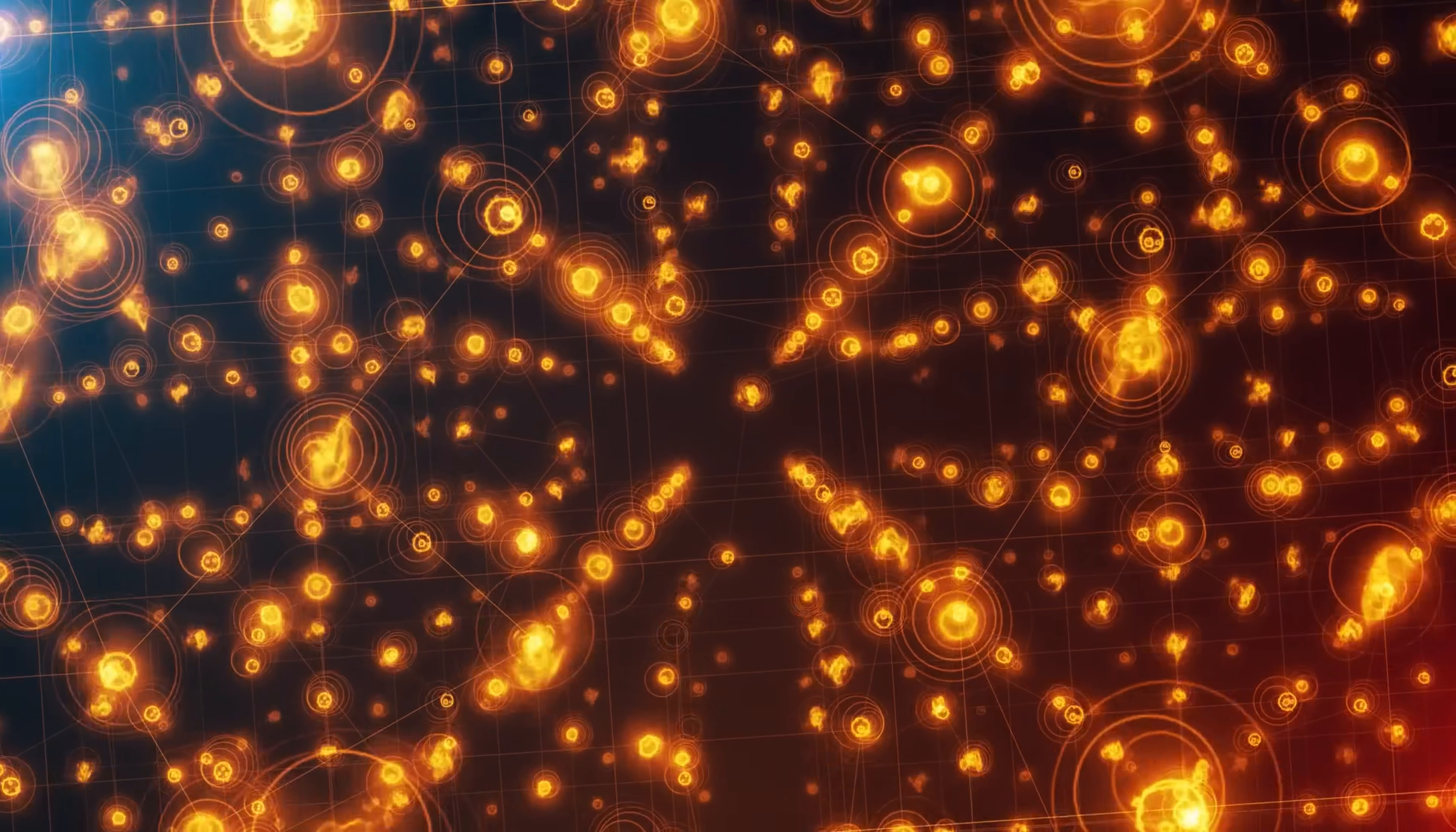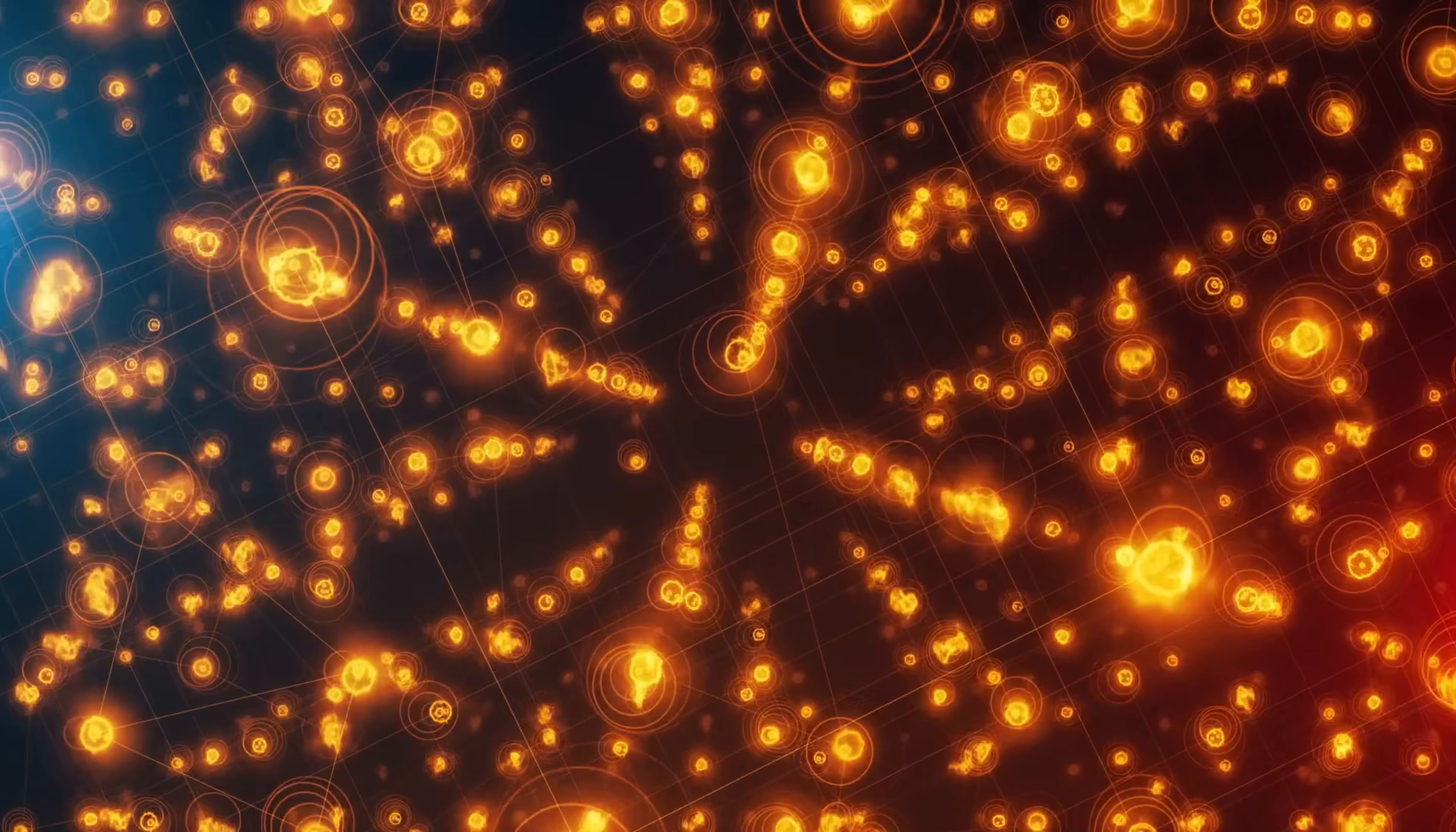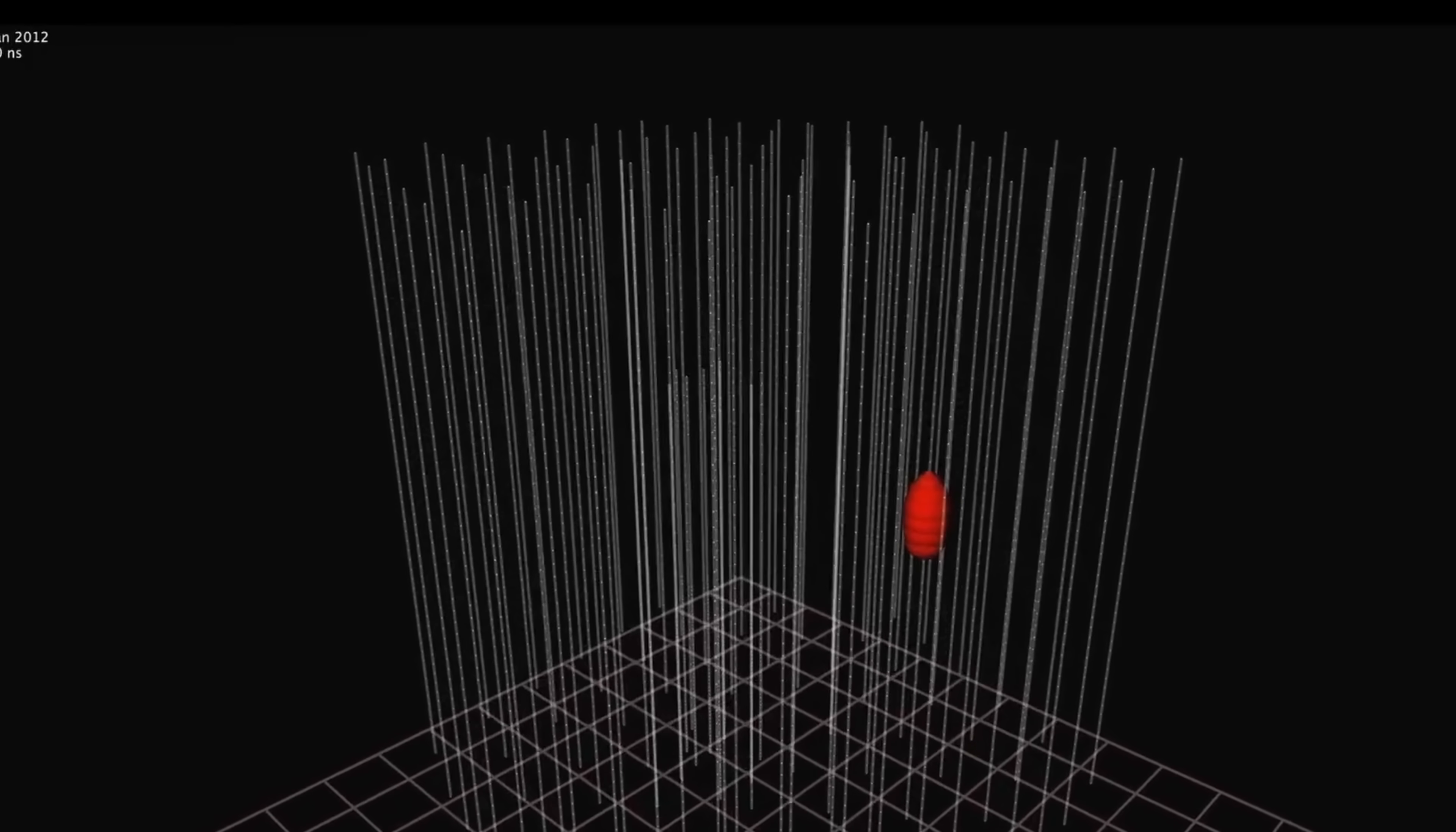So by detecting this somewhat faint blue glow, it becomes possible to not just catch neutrinos but even find out where they came from. Mostly because by having a lot of these detectors in a relatively large volume, it becomes possible to trace the path of the neutrino as it passes through all of this water. And this has been done many many times.